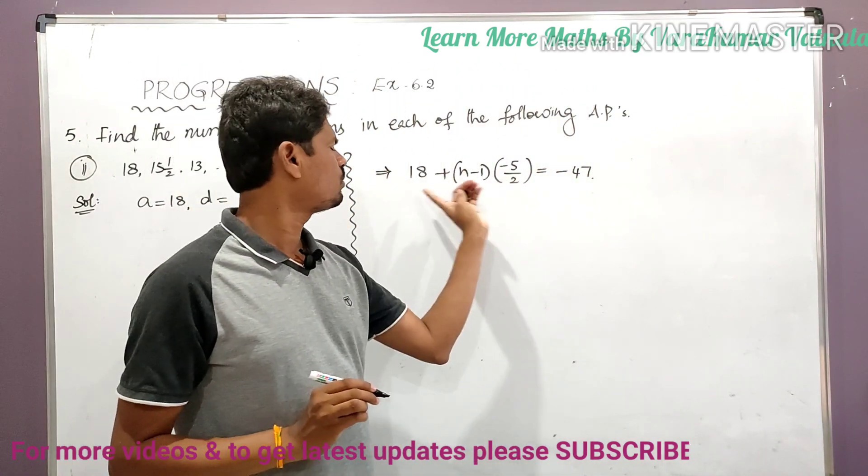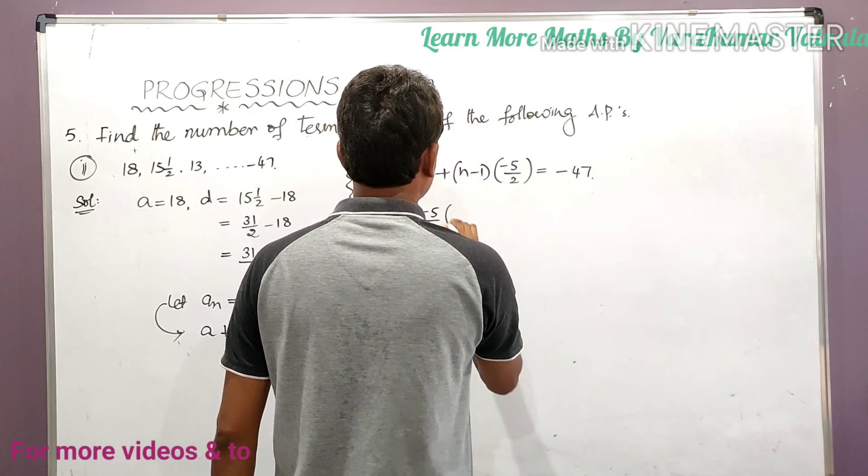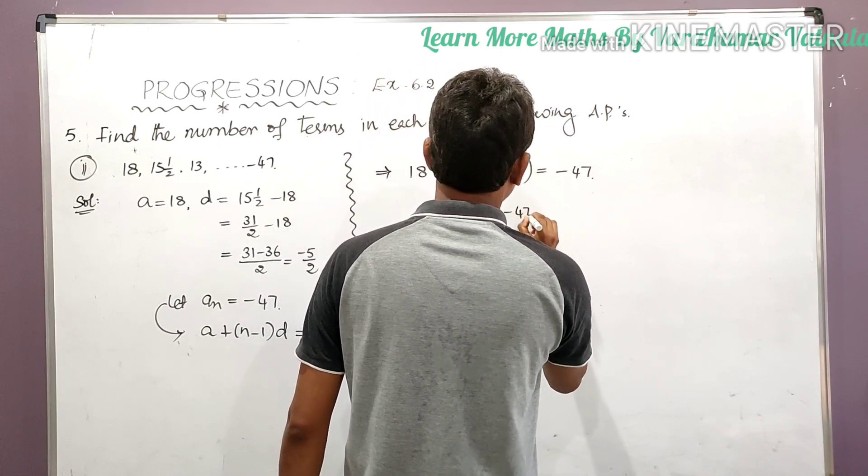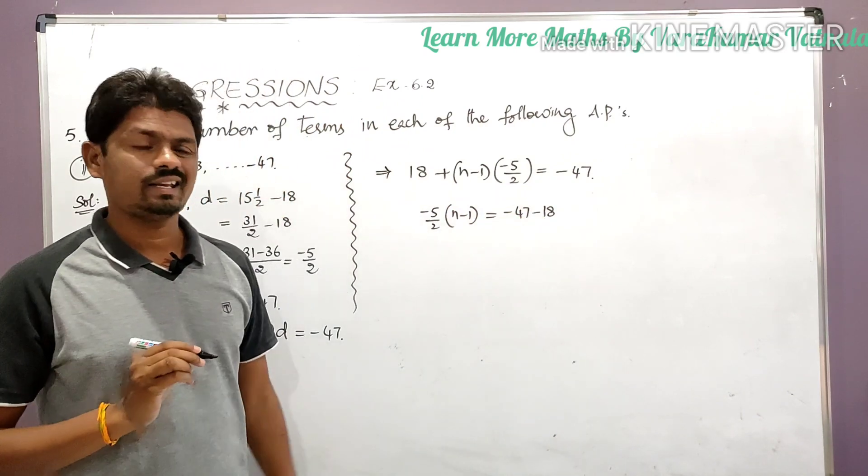To find the n value, take 18 to the right side. Here we can get minus 5/2 into (n minus 1) is equal to minus 47, again plus 18 becomes minus 18.